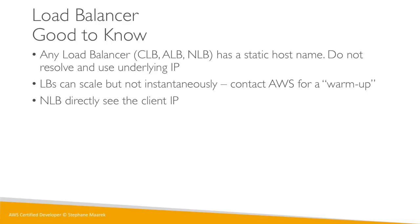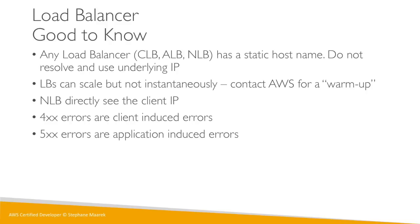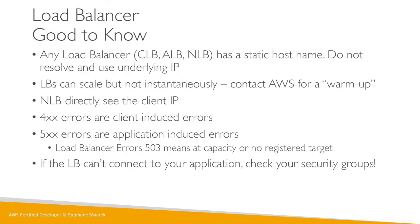Unlike ALB and CLB, NLBs expose the client IP directly to the application side, so there is no X-Forwarded-For header needed for NLB. 4xx errors are client-induced errors; 5xx errors are application-induced errors. A 503 means the ELB has no more capacity or no registered targets. If the load balancer cannot connect to your application, check your security groups. To summarize: three types of load balancer, one is deprecated, the most common at the exam is the ALB — remember stickiness, health checks, and target groups.